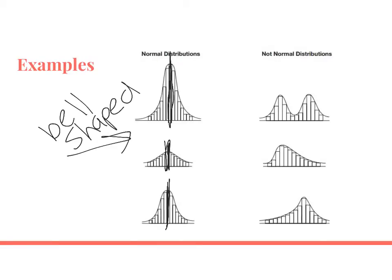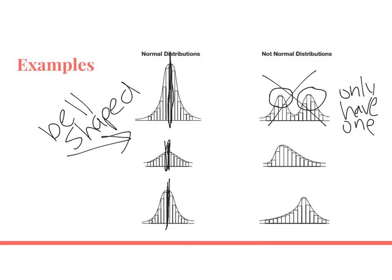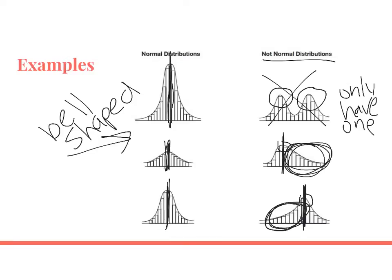On the non-examples, the first one has two maxes — we can only ever have one. If it has two peaks, it is not a normal distribution. The other non-examples have just one peak, but if you imagine splitting the data, they're not symmetric — one has way more data on the left, and the other has way more on the right. These are considered not normal distributions because they're skewed left or skewed right.